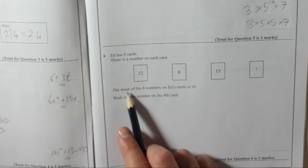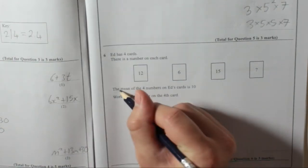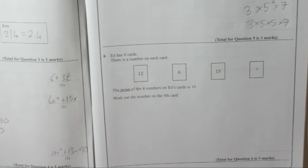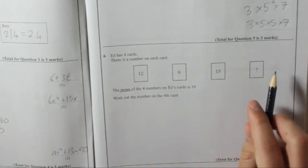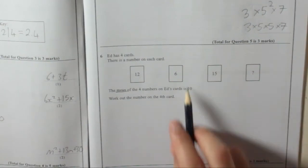The mean of the four numbers on Ed's cards is ten. Work out the number on the fourth card. Now, mean - that's important. You remember how to find the mean? You would add them all up, divide by how many there are, and you get ten.